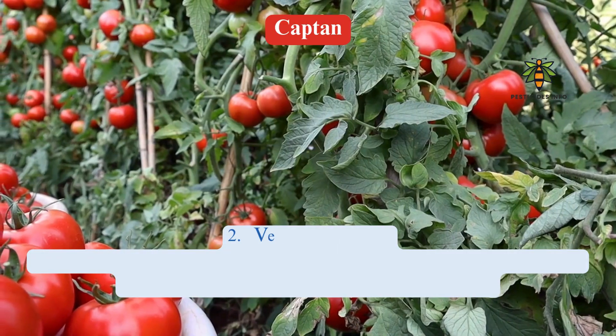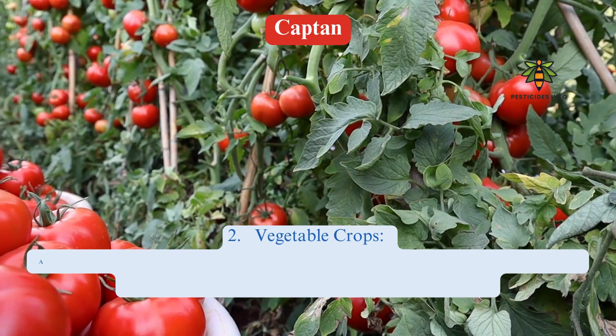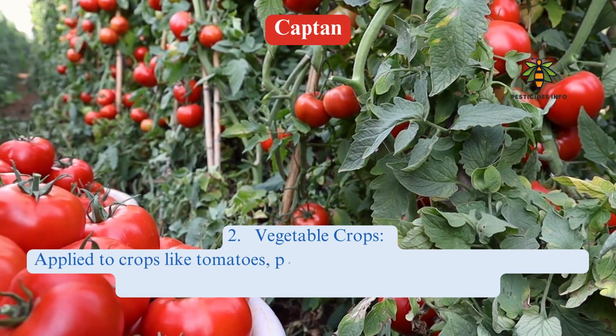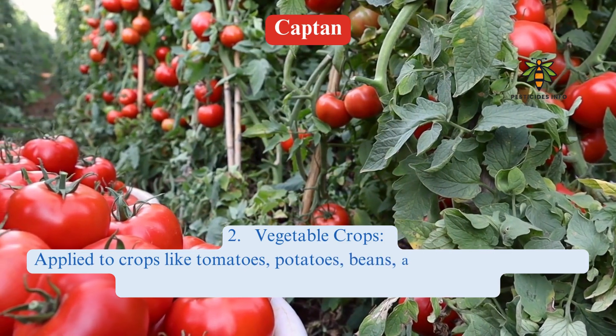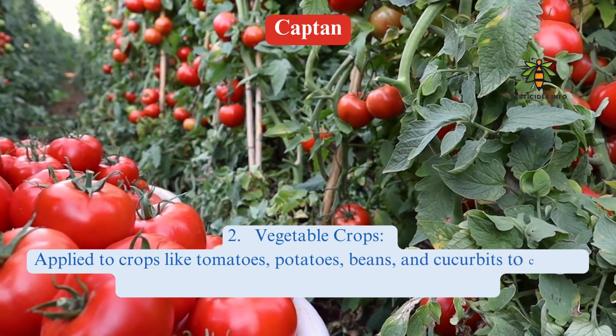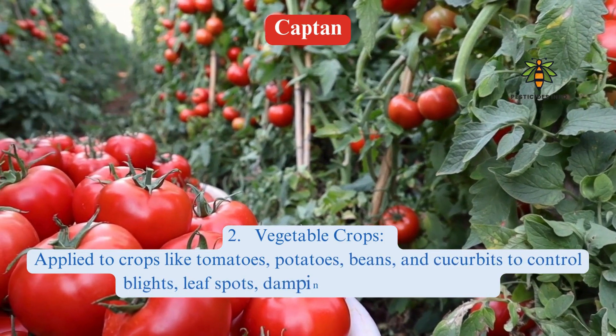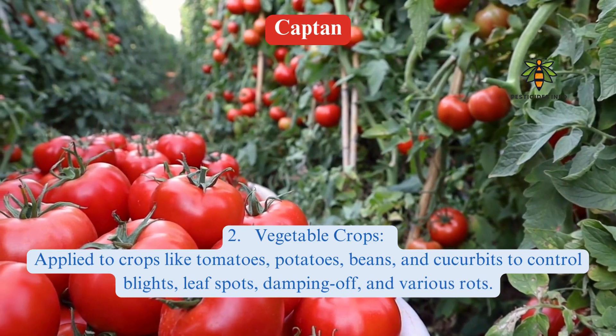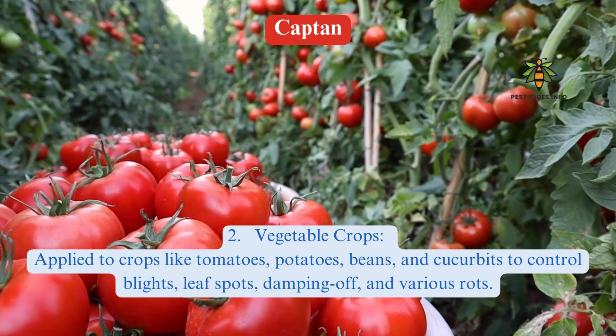2. Vegetable crops: applied to crops like tomatoes, potatoes, beans, and cucurbits to control blights, leaf spots, damping off, and various rots.